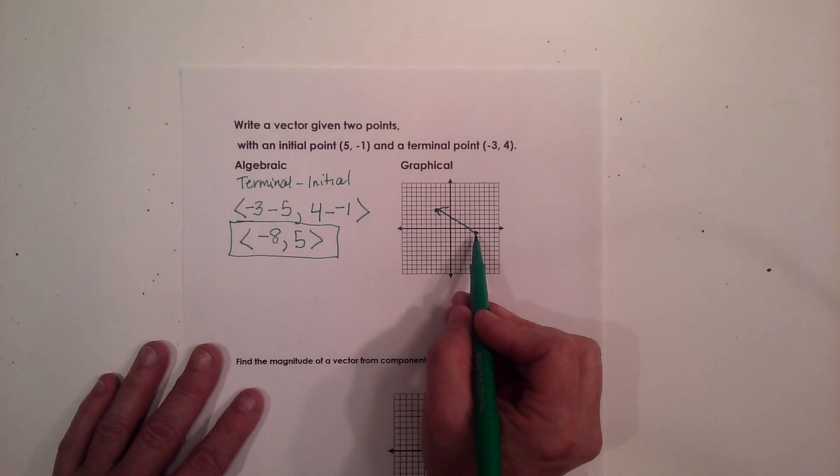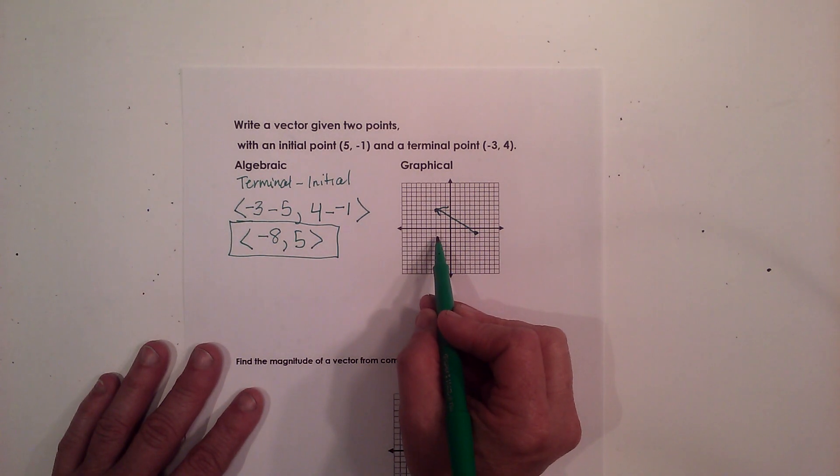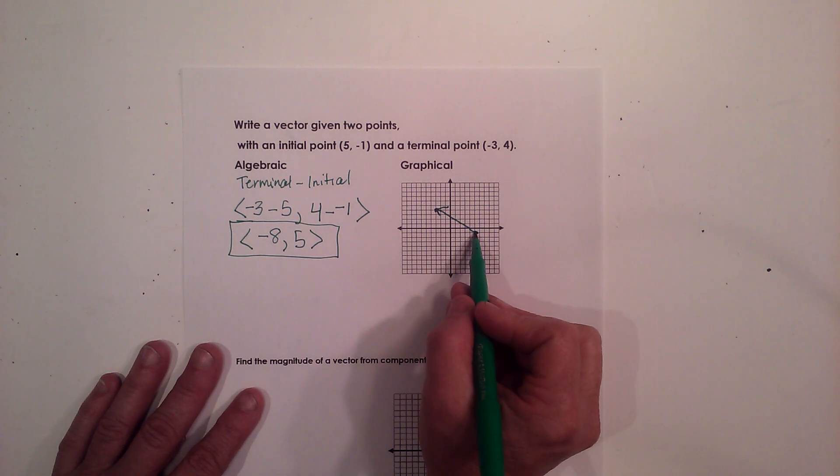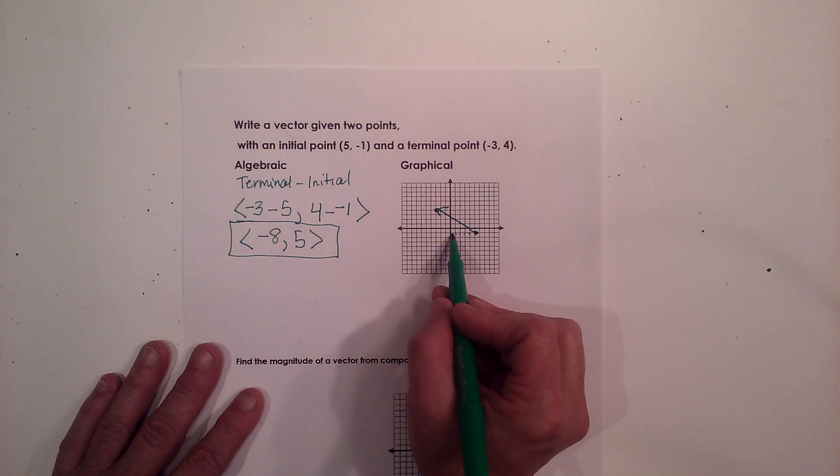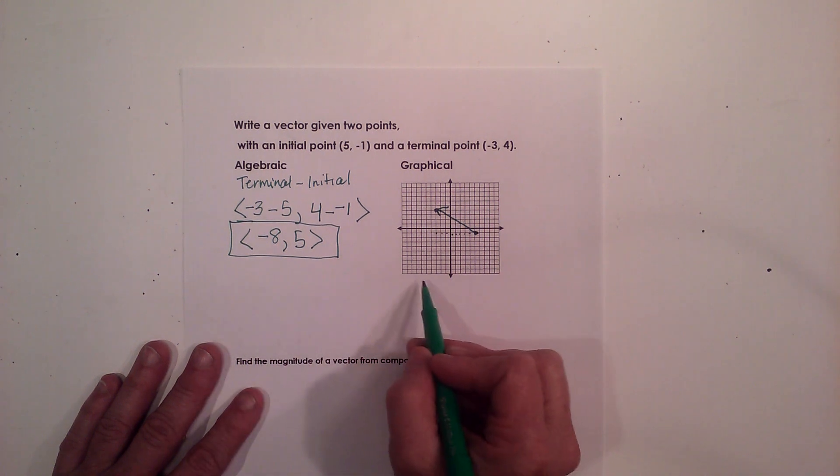So I can now count my horizontal direction and my vertical direction. So I can go 1, 2, 3, 4, 5, 6, 7, 8, and that is 8 in the left direction, therefore it is negative.